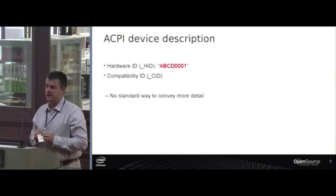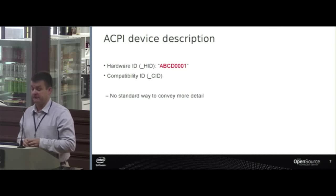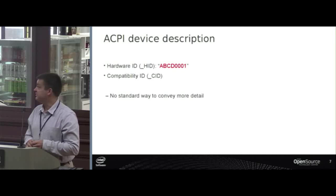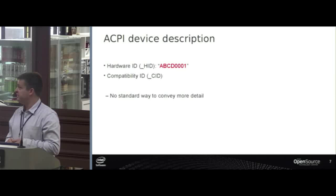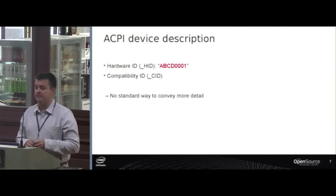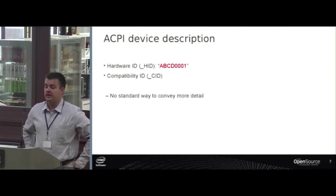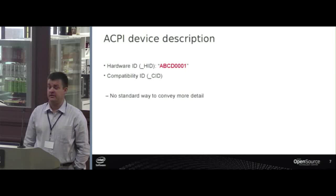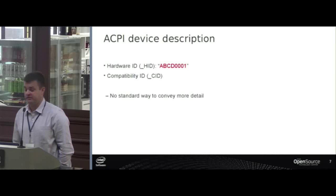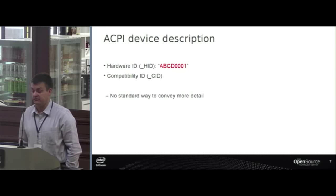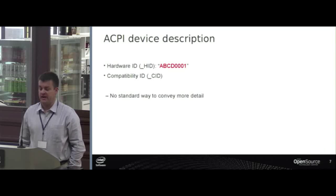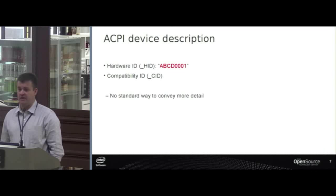To compare, in ACPI — which does a lot of other things beyond purely device enumeration — the device enumeration basically grew out of ISA plug-and-play and has the same type of device ID: four letters and four numbers. You have a very similar setup with compatibility IDs. An ACPI device has a hardware ID, which can be considered equivalent to the first string in the compatible list for device tree, and then compatibility IDs. But the thing in ACPI until recently was there was no way to give any more information than that — no standard way to give additional properties and describe the device.